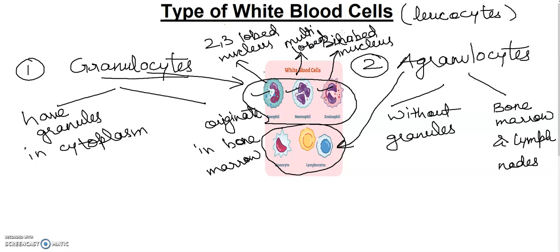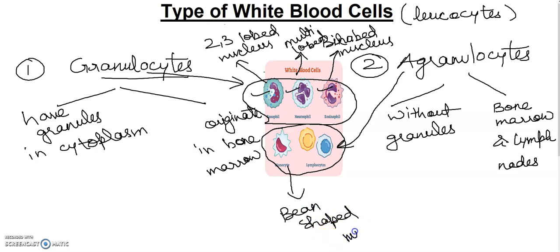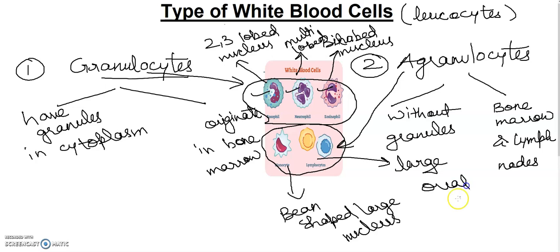Moving to agranulocytes: monocytes have a bean-shaped large nucleus, as you can see in the picture. You can see the bean-shaped nucleus clearly. Lymphocytes have a large oval nucleus.